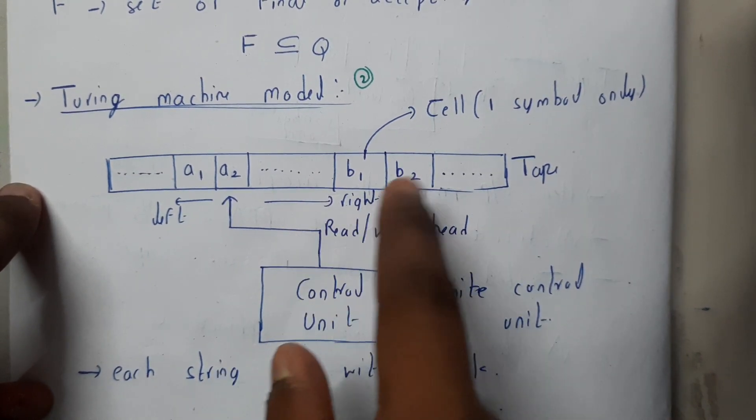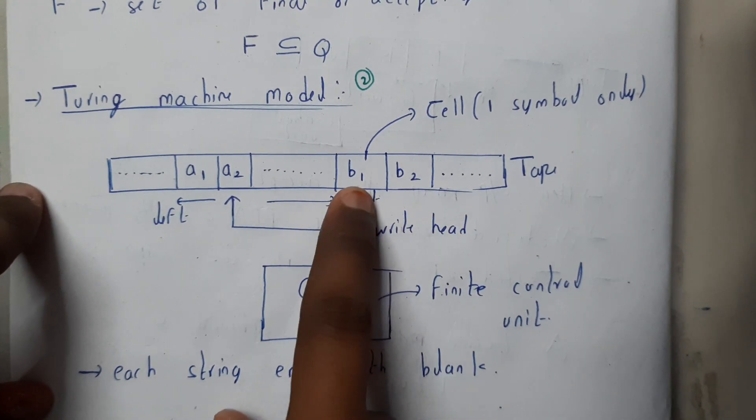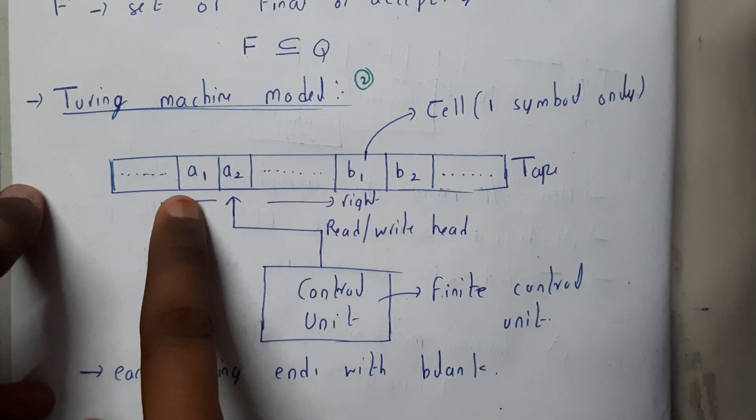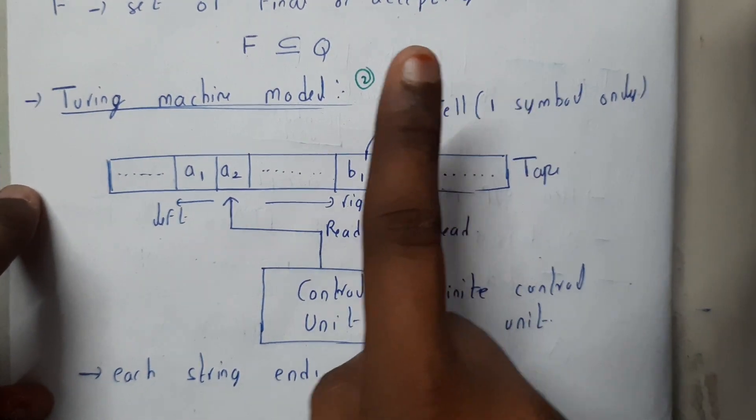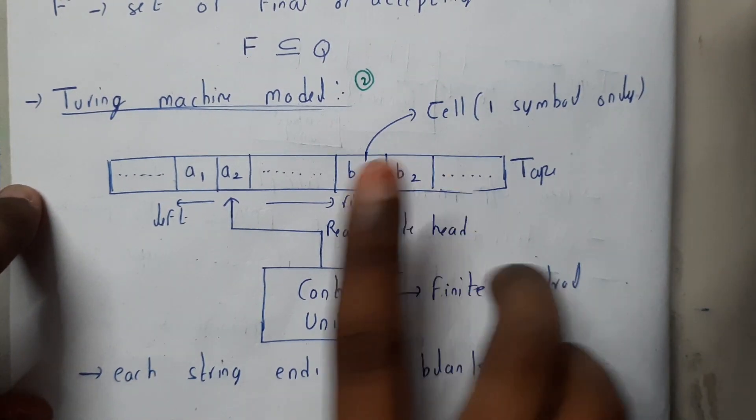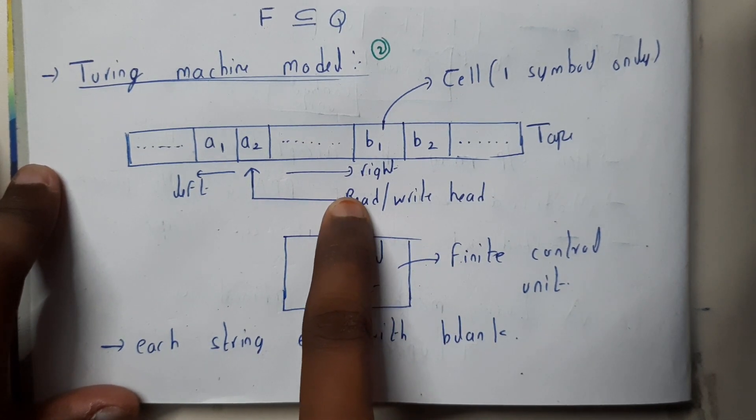It is divided into individual cells, so each cell is going to have a particular symbol only. It can store only one symbol. The tape is infinite and it is going to have a control unit which controls the read-write head.